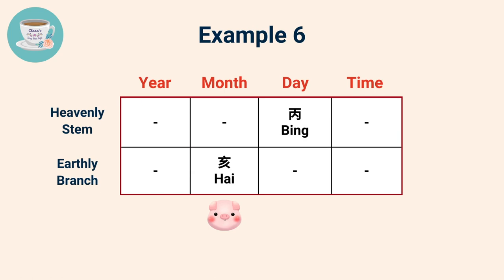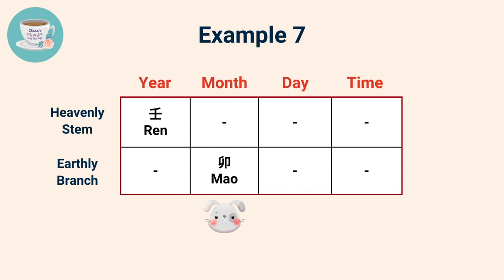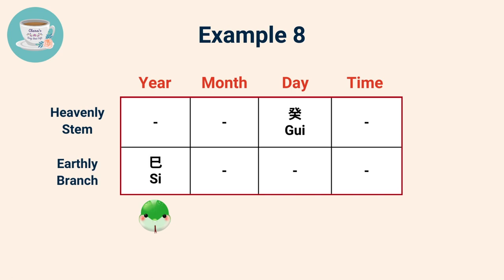If your year stem or day stem belongs to Ren or Gui in the heavenly stems, then the compatible earthly branches are Mao and Si. For example, if Ren is your year stem, then Mao — the rabbit — is your Nobleman star. If your day stem is Gui, then the snake is your Nobleman star.